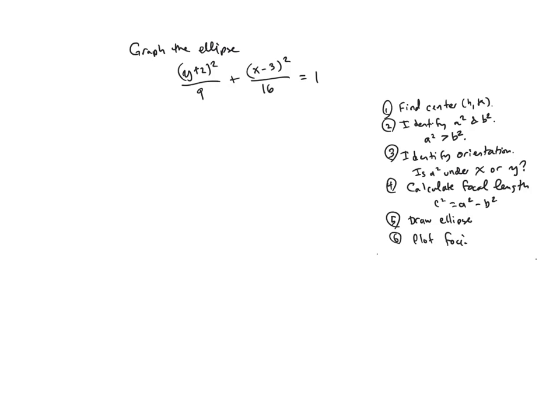So the first thing I would do is identify my center. If you remember, the standard form has h and k in the parentheses with x and y. The only thing you have to be careful about here is that the h always comes from the x and the k always comes from the y. So the center of this ellipse would be 3 comma negative 2 because we have to change the sign on each of those things coming out of the parentheses.